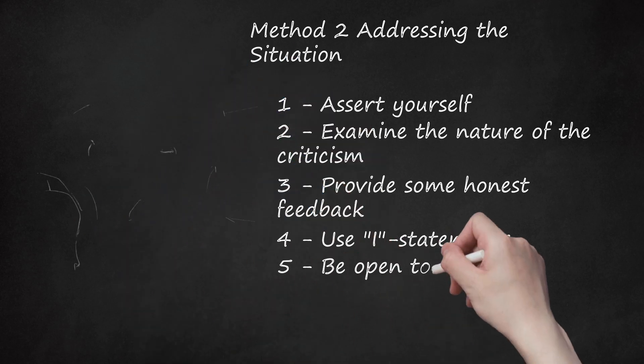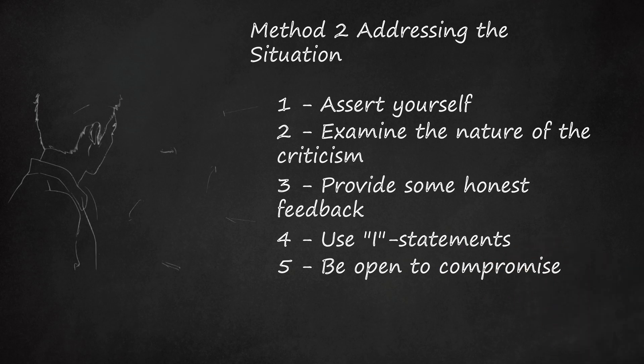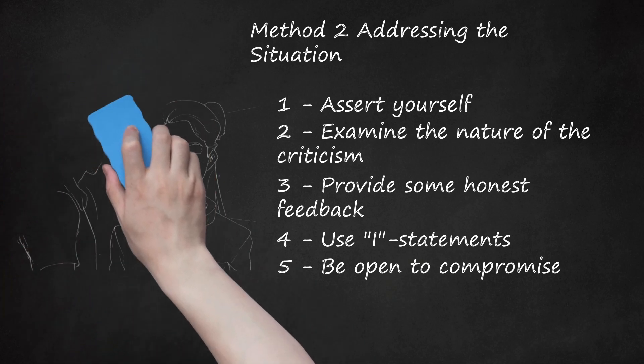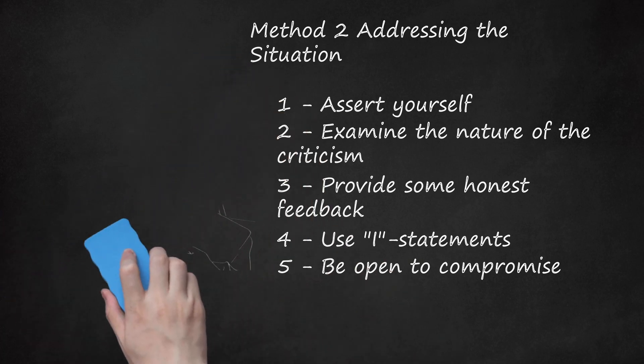Five, be open to compromise. Even if you feel you're in the right, living with someone means compromise. Look for ways you can meet an overly critical person halfway. Accept any criticism that is valid. We all have bad habits that can irritate a roommate, family member, or significant other. If there's something you're doing wrong, even something small, make an effort to change. Try to work on letting go of some of your resentment. Understand where the other person is coming from and, on occasion, give in to his or her demands.